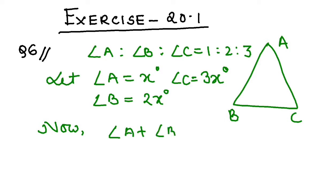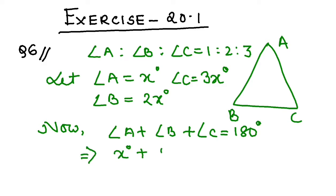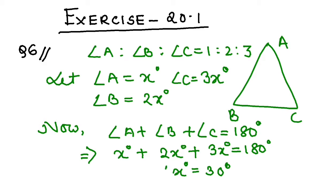Now, what is the sum of all the angles in a triangle? The sum of all the angles in a triangle is 180 degrees — the angle sum property. So angle A is x, angle B is 2x, and angle C is 3x, which equals 180 degrees. From here you can find the value of x, and x will be 30 degrees.